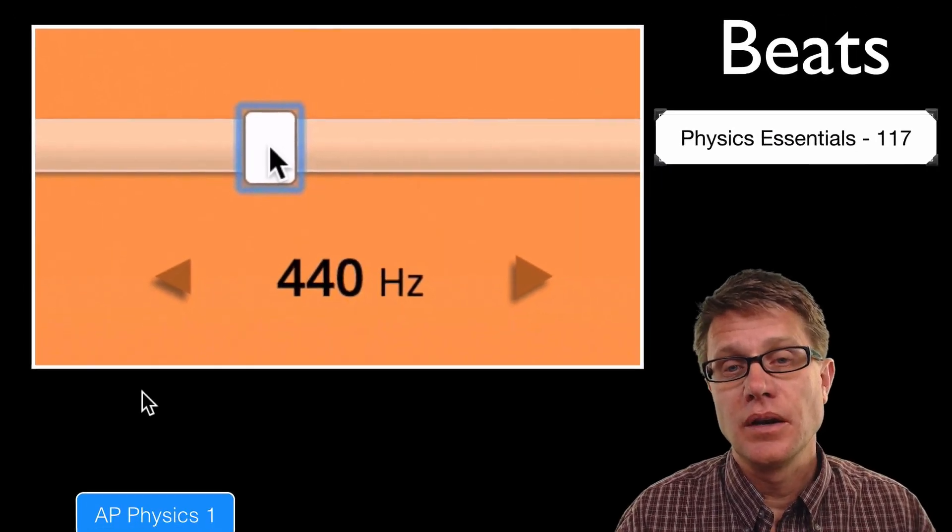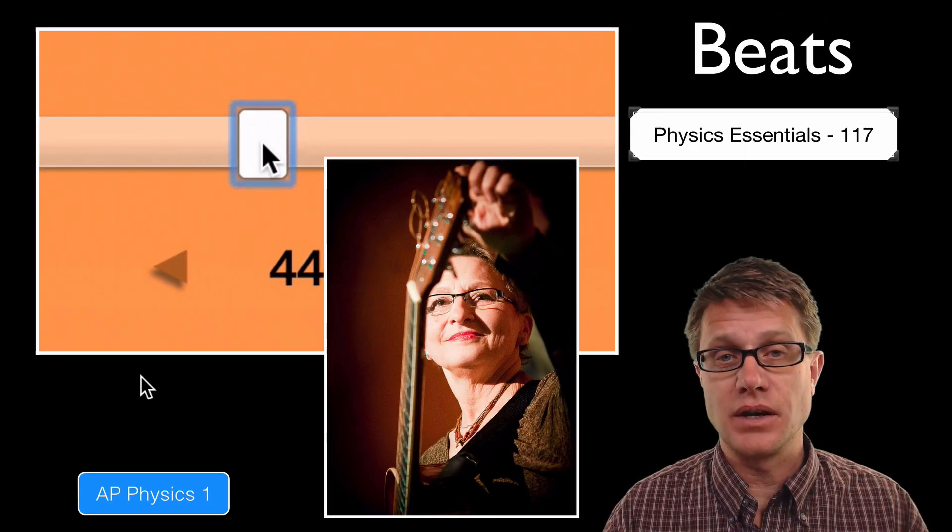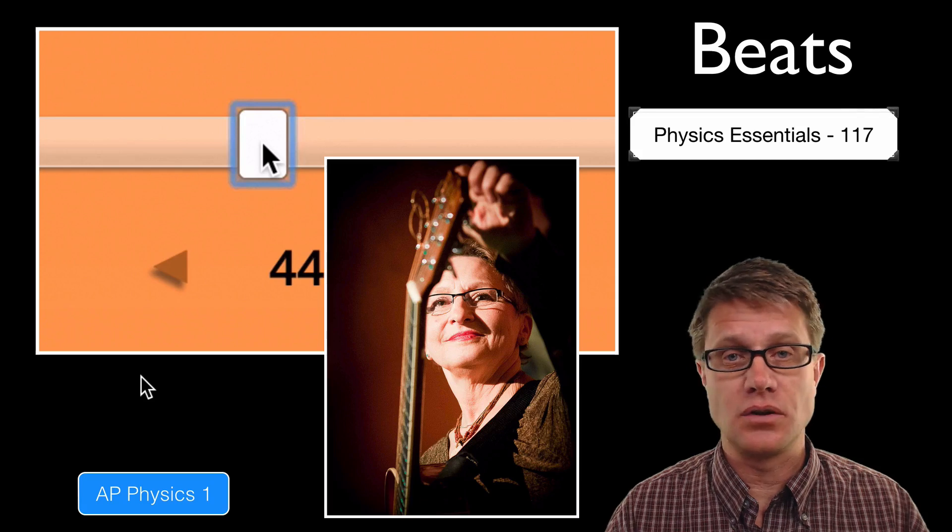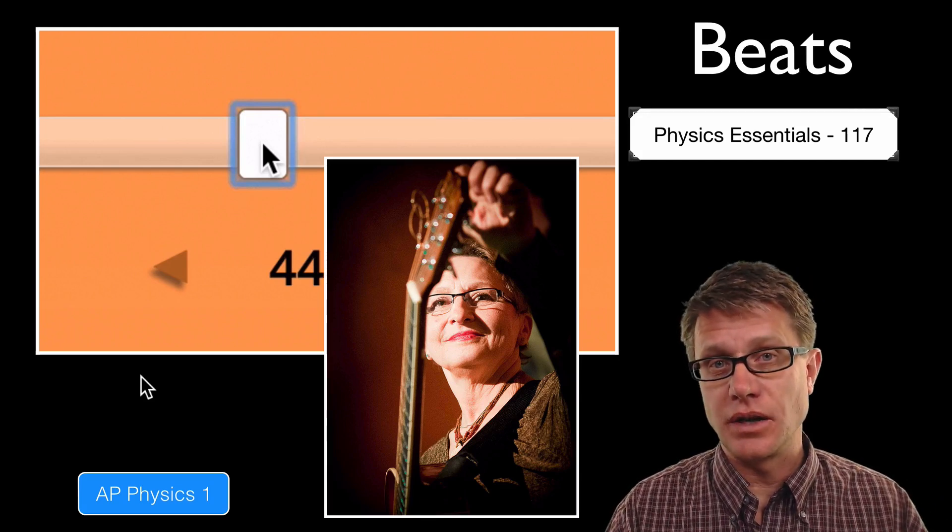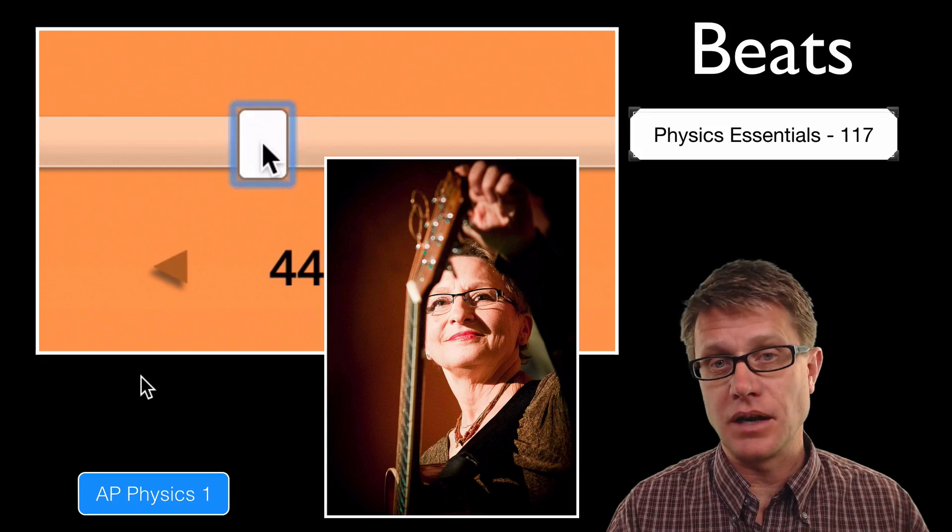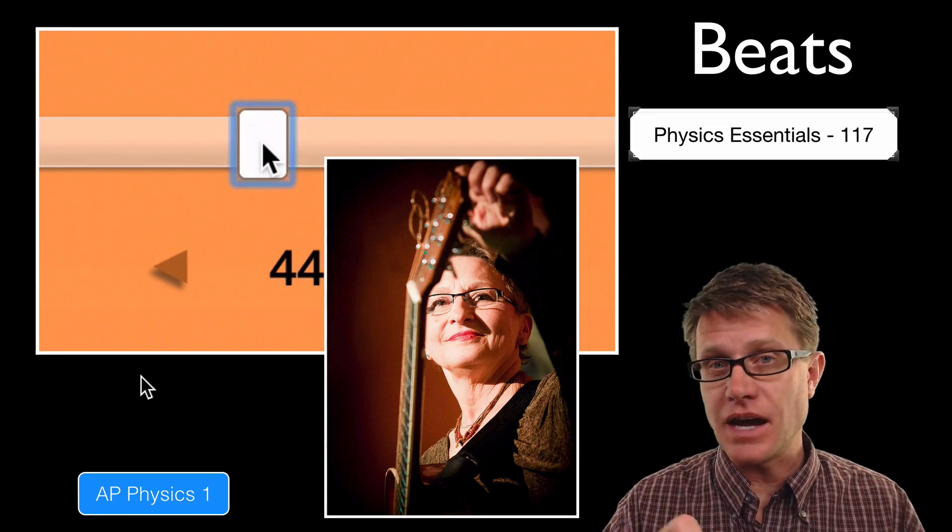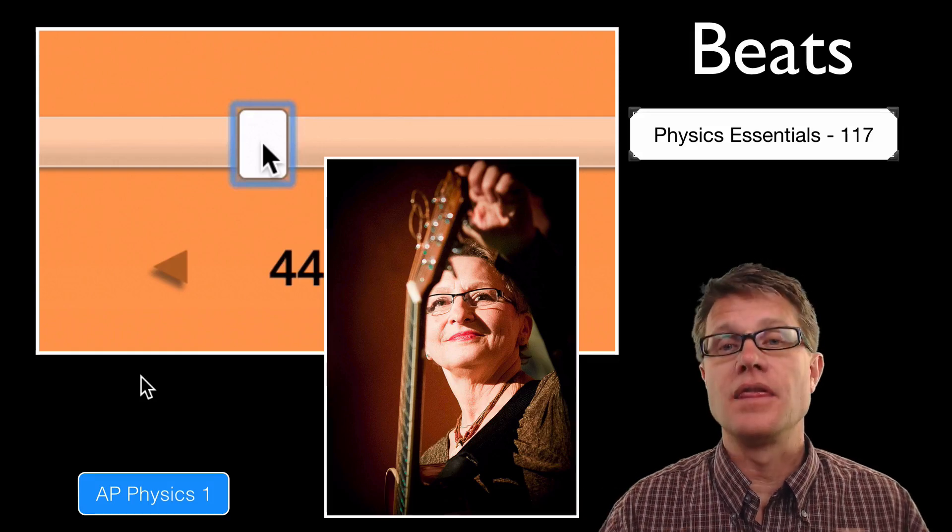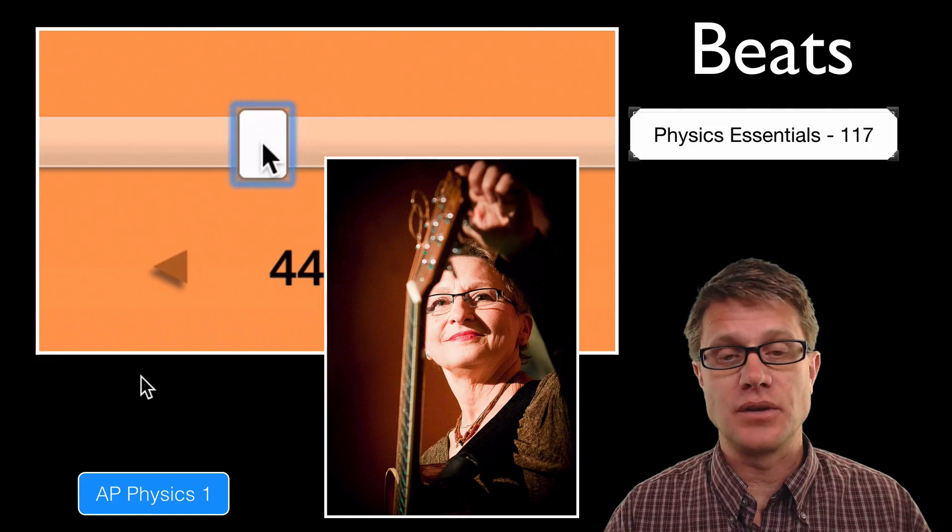Now when would this be useful? Well, let's say you are tuning your guitar. What you can do is tune one of the strings to a tuner or a piano or something like that. Once you have that, then you can play another string. You have to move up on the fret, but play another string. And if it is close you will hear the beats. And if it is exactly the same, you can adjust the one, then the beats will go away. And then you can move on to the next string and the next string and the next string.